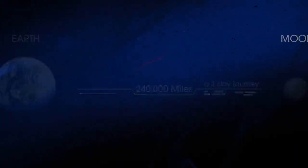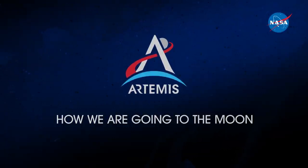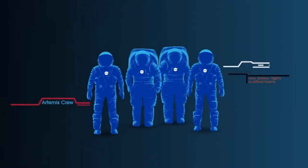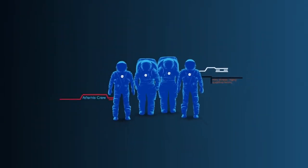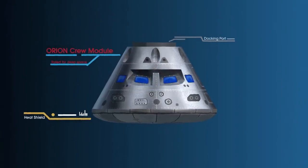So, what will an Artemis mission look like? Everything is designed and tested with our most important element in mind, the astronauts. This is their deep-space, human-rated spacecraft called Orion, built in three parts.